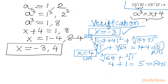So our final integer solutions of this radical equation are x equal to negative 3 and x equal to 4. This brings the end of the video. Do not forget to like, share and subscribe. Bye bye till next video friends, take care of yourself.